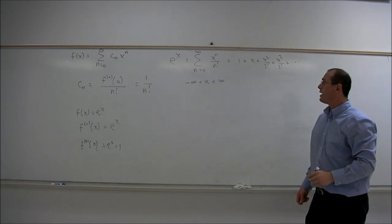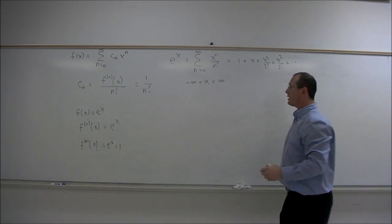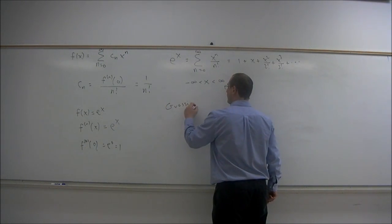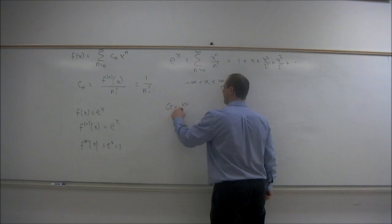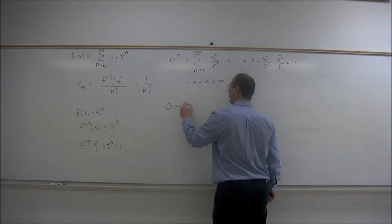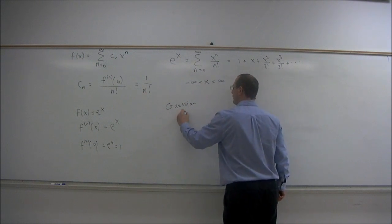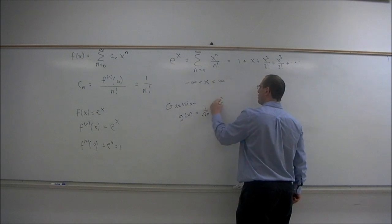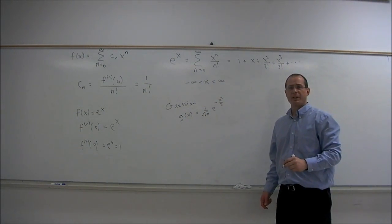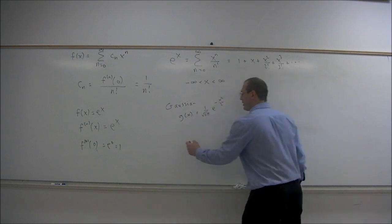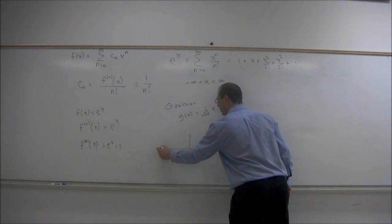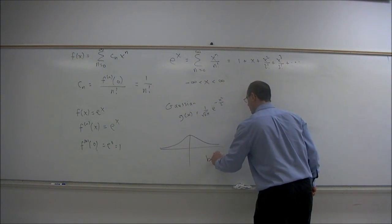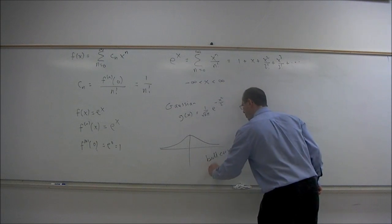So our next goal then is to use this equation to integrate the famous Gaussian. That would be the function 1/√(2π) · e^(-x²/2). This is a famous curve in probability and statistics, also known as the standard normal curve. The graph looks something like this, the bell-shaped curve.